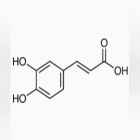Caffeic acid is an organic compound consisting of phenolic and acrylic functional groups. It is a yellow solid found in plants, as it is an intermediate in the biosynthesis of lignin. Coffee is actually a primary source of caffeic acid in the human diet, and caffeic acid is also a potent antioxidant.